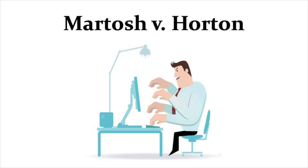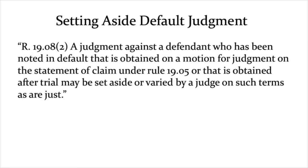Horton has another argument based on Rule 19.02, which basically says that default orders can be set aside without being appealed. What that means in practice is that if you're a plaintiff and you get a default judgment because the defendant has simply done nothing and ignored your statement of claim, and there's nothing wrong with the reasons for which you were granted default judgment, the defendant is still allowed to come out of the woodwork later and have that default judgment set aside.